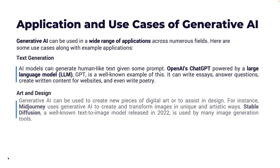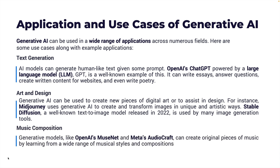When it comes to art and design, Generative AI can be used to create new pieces of digital art or to assist in design. For instance, Midjourney, a very popular tool, uses Generative AI models to create and transform images in unique and artistic ways. Stable Diffusion, a well-known text-to-image model released in 2022, is used by many image generation tools including Midjourney. When it comes to music composition, generative models based on OpenAI's MuseNet or Meta's AudioCraft can create original pieces of music by learning from a wide range of musical styles and compositions.